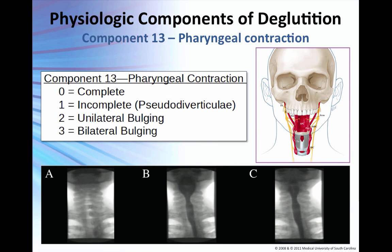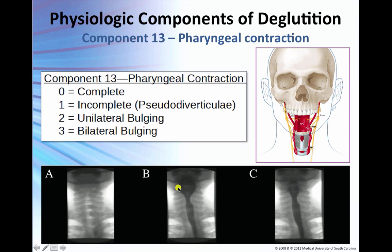Pharyngeal contraction, component number 13, is assessed in the AP view. You're looking at the laterality and symmetry of the lateral walls of the pharynx — their ability to both lift and compress. It's really a combination of pharyngeal shortening associated with laryngeal elevation and pharyngeal stripping or compression of the bolus on both sides.